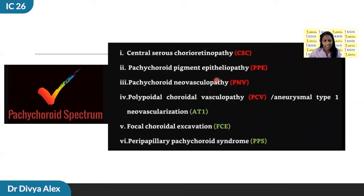The thick choroid comes under the pachychoroid spectrum. It contains a lot of diseases like CSCR, pachychoroid pigment epitheliopathy, pachychoroid neovascularopathy, PCV, focal choroidal excavation, and peripapillary pachychoroid syndrome.